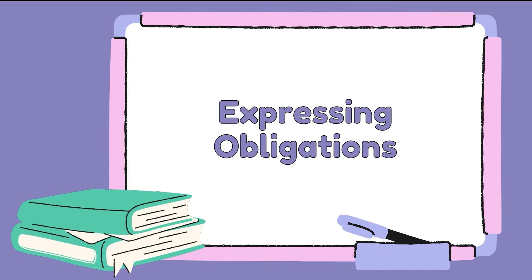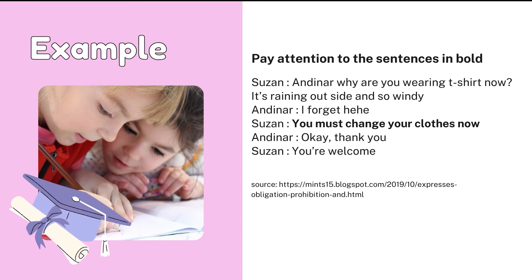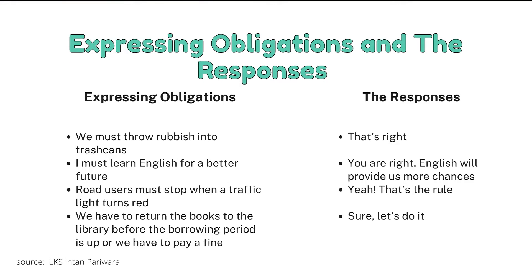Let's start with the first one: expressing obligation. Look at this example — pay attention to the sentence in bold. This is a dialogue between Susan and Andinar. Andinar: 'Why are you wearing a t-shirt now? It's raining outside and so windy.' Susan: 'I forgot.' Andinar: 'You must change your clothes now.' Susan: 'Okay, thank you.' So in that dialogue there is a sentence: 'You must change your clothes now.' The phrase 'must change' shows that we must or it is a rule that we must change clothes because the situation is rainy and windy.